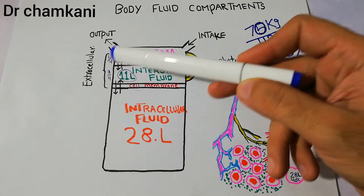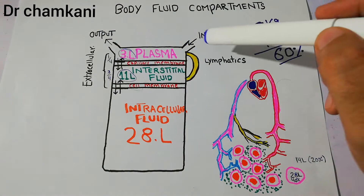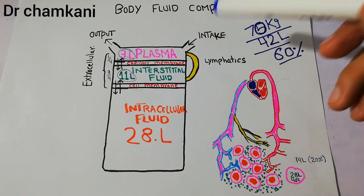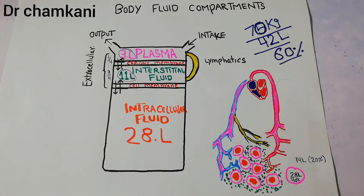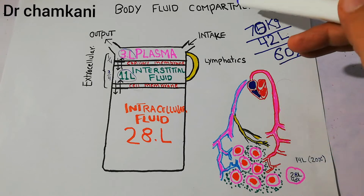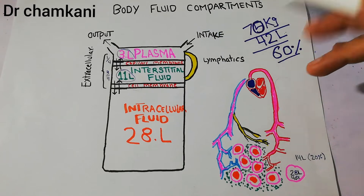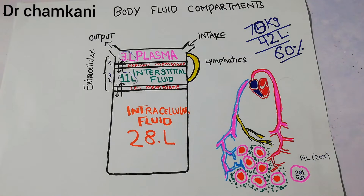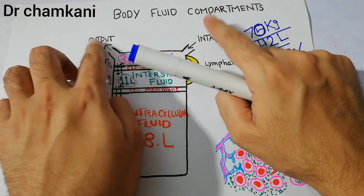Fluid is coming in and fluid is going out of the body. The fluid intake includes water, juices, coffee, tea, and the fluid coming from the oxidation of carbohydrates. The output is determined by fluid loss through sweating, insensible loss through skin, insensible loss through lungs, loss in the urine, and loss in the feces.